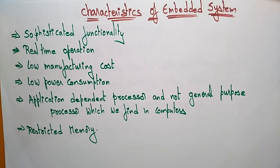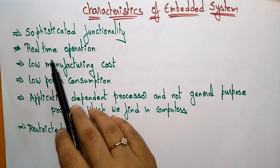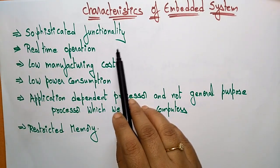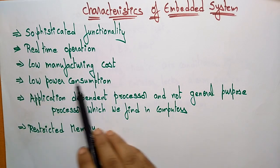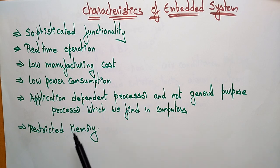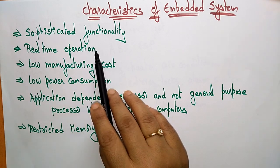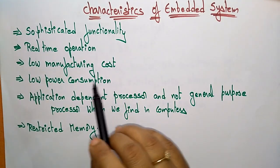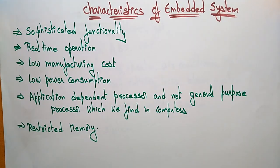Hi students, coming to the next topic — the characteristics of embedded systems. The different characteristics of embedded systems are: sophisticated functionality, real-time operations, low manufacturing cost, low power consumption, application-dependent processor, and restricted memory. Whatever embedded system you take, that system implements sophisticated functionality.